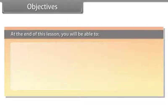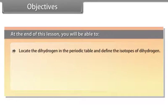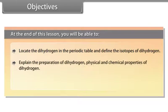Objectives. At the end of this lesson, you will be able to locate the hydrogen in the periodic table and define the isotopes of hydrogen, explain the preparation of dihydrogen, physical and chemical properties of dihydrogen, and explain hydrides.